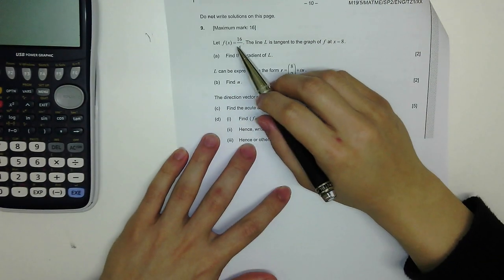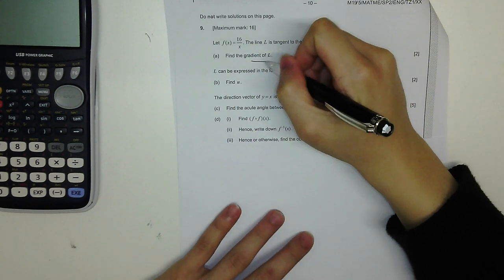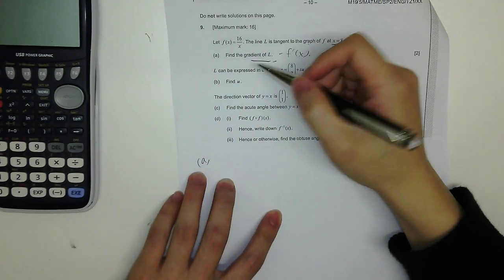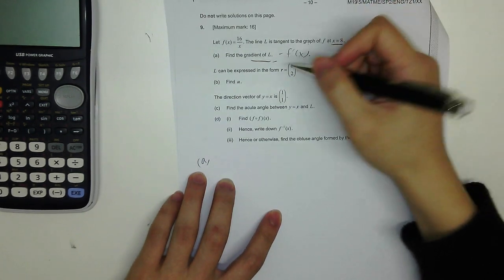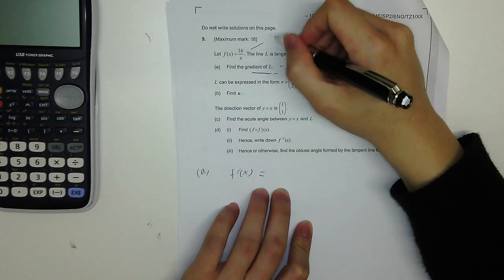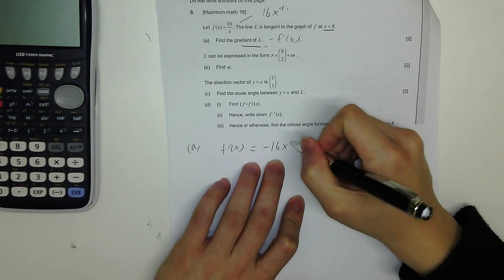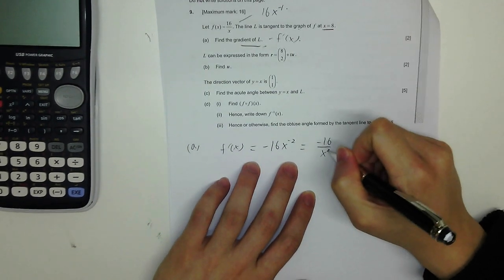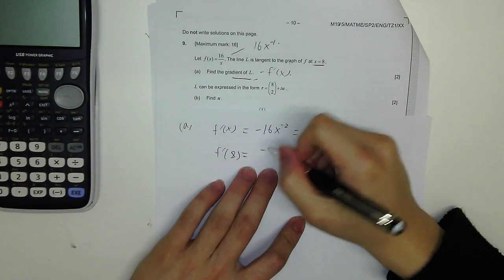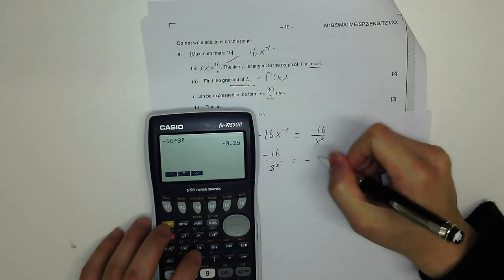Question 9. Let f(x) = 16/x. The line L is tangent to the graph of f at x = 8. Part A: find the gradient of L. The gradient of a tangent is f'(x). We differentiate: 16/x = 16x^(−1), so f'(x) = −16x^(−2) = −16/x². At x = 8: f'(8) = −16/64 = −1/4.